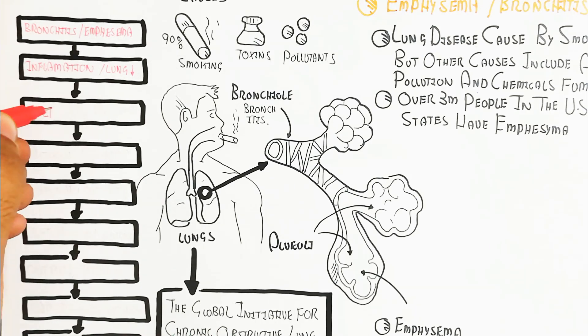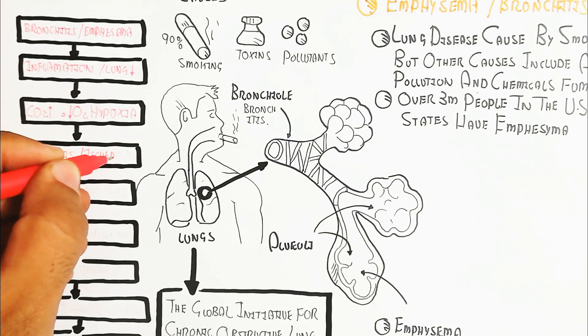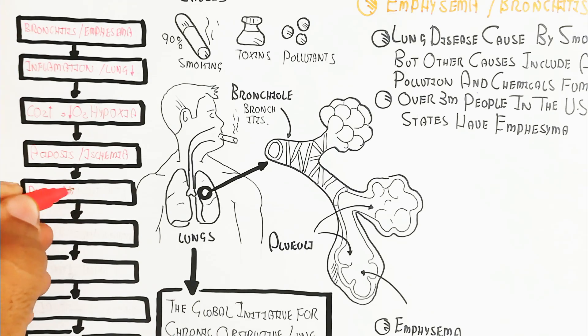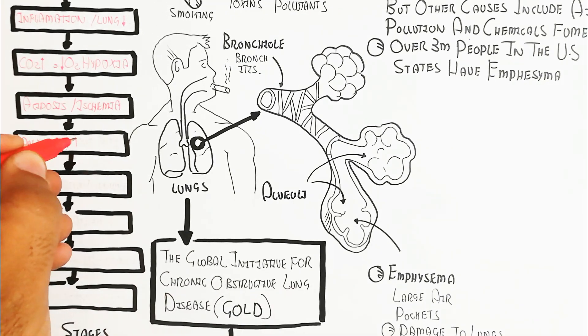Bronchitis and emphysema lead to inflammation, decreased lung function, increased blood carbon dioxide, and hypoxia.